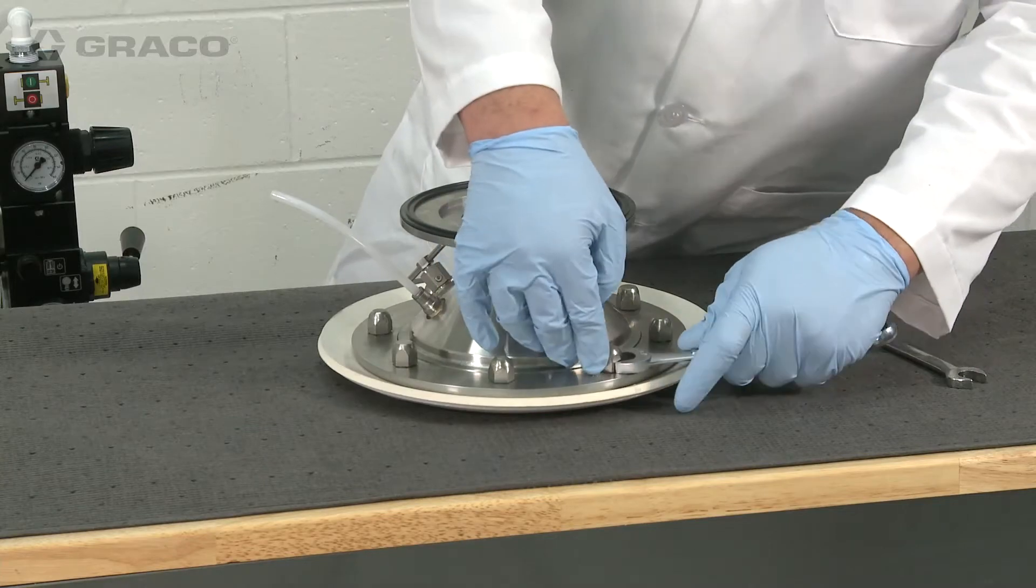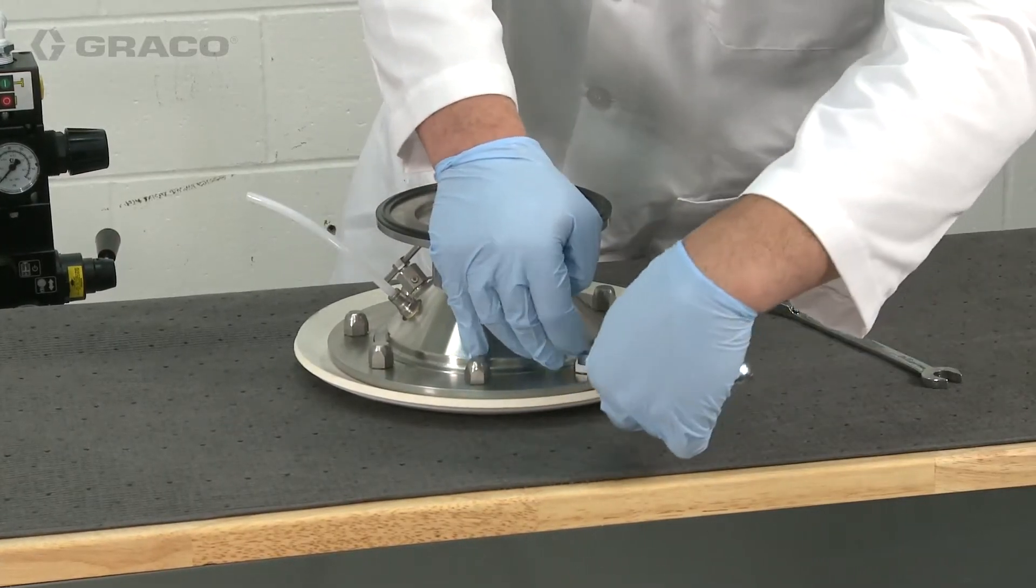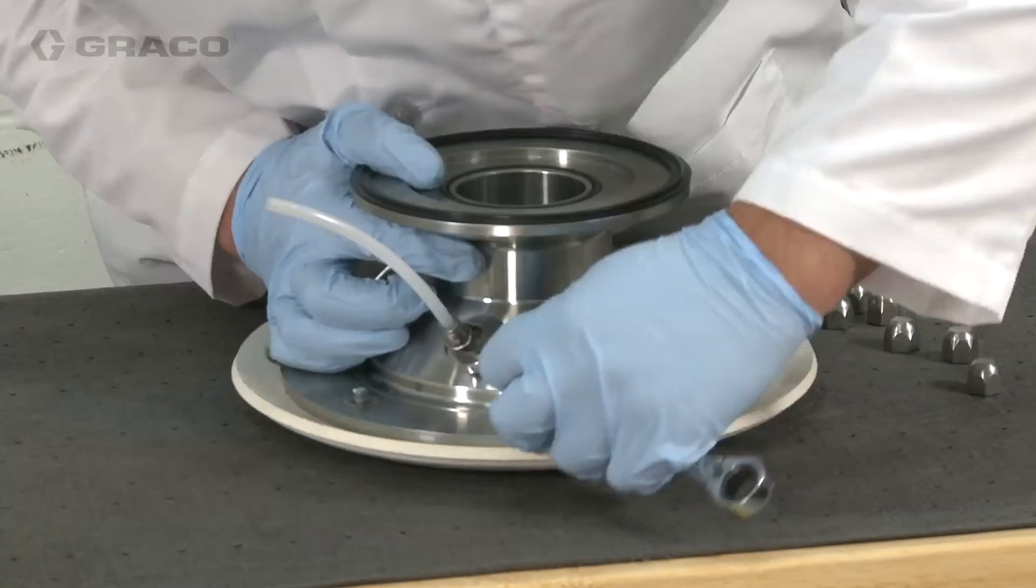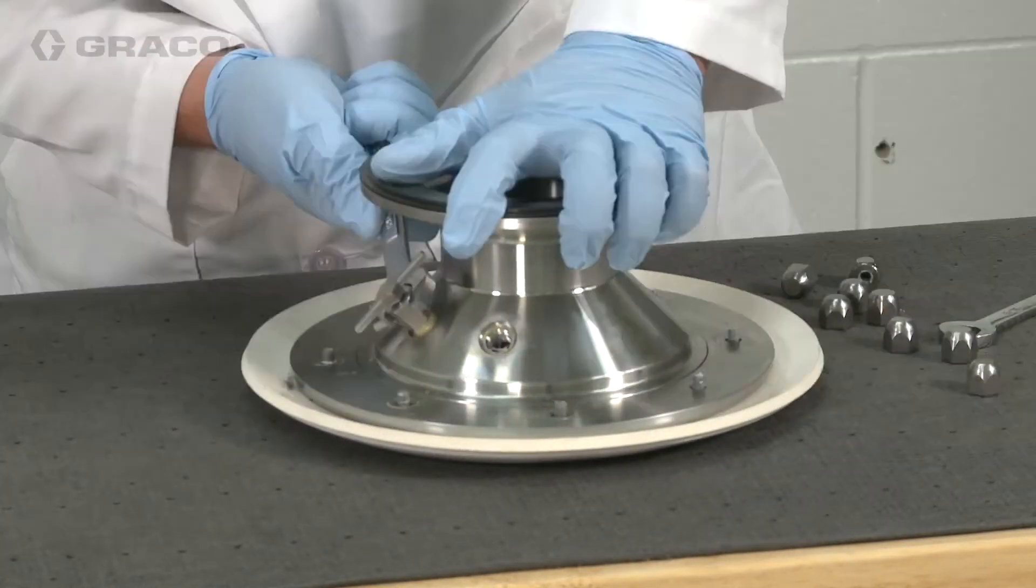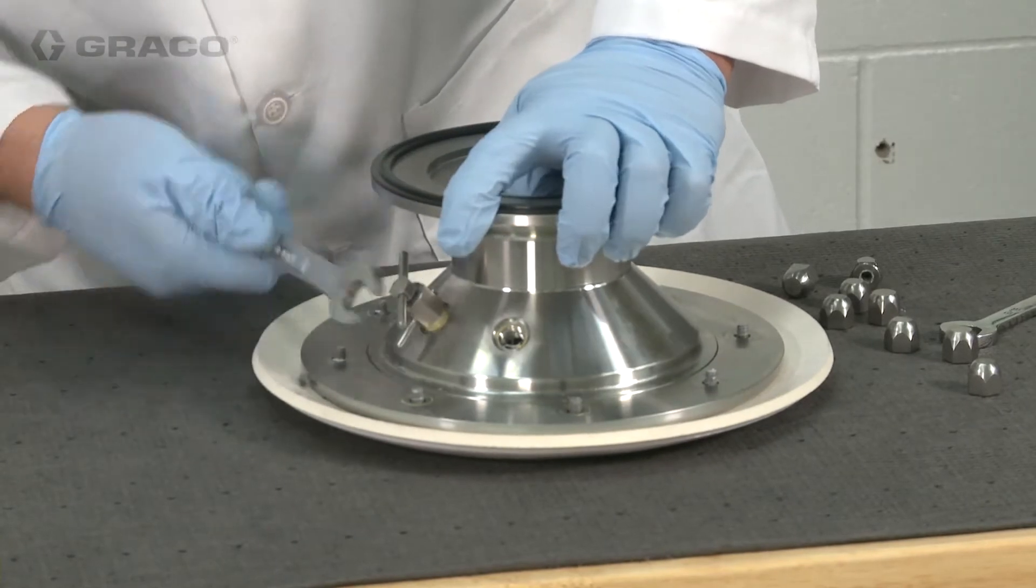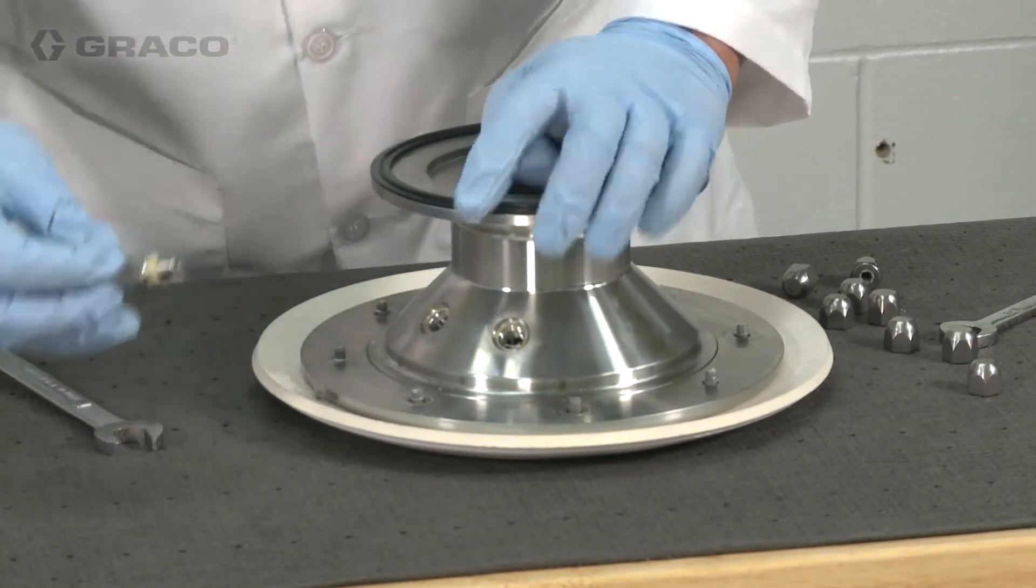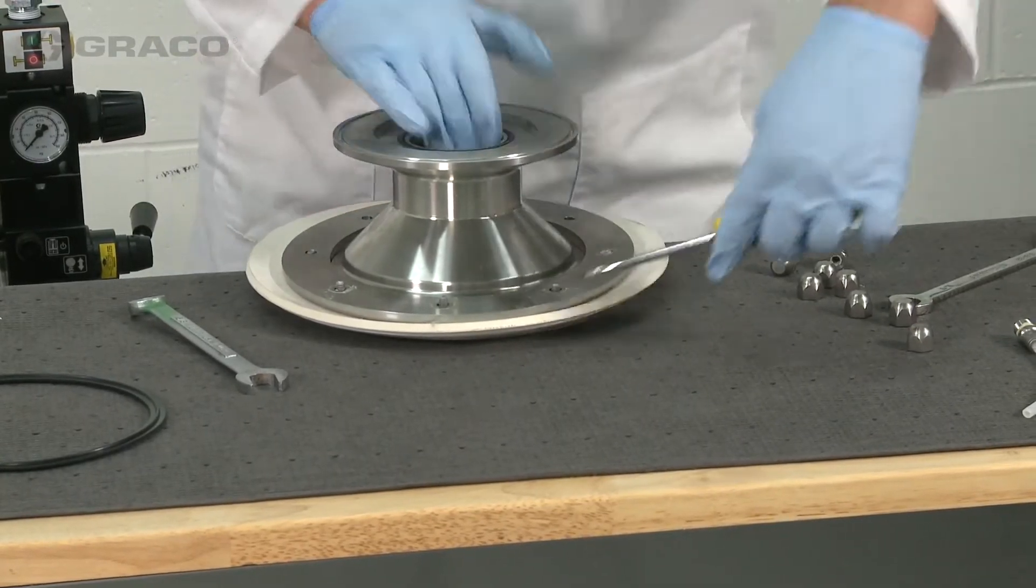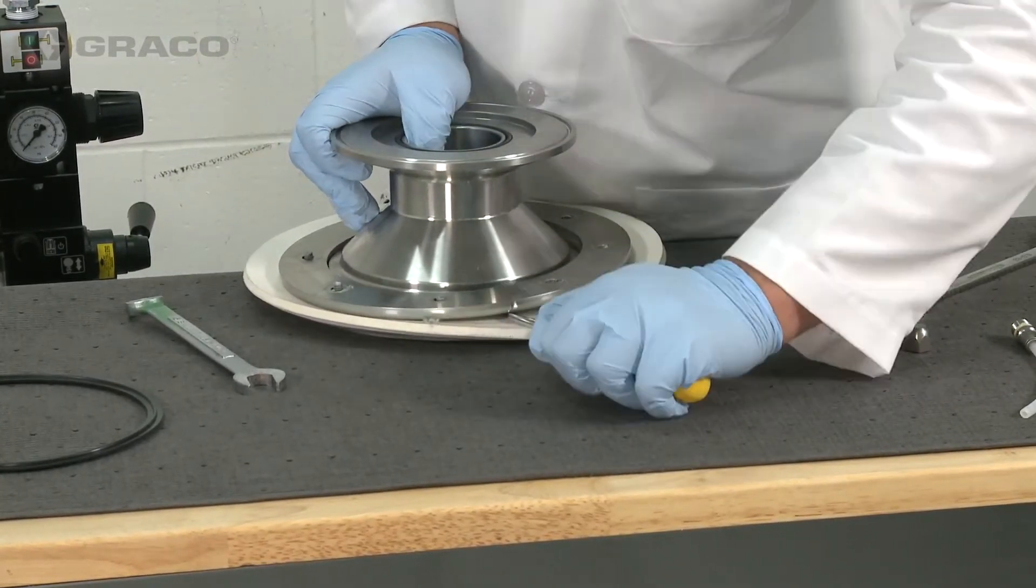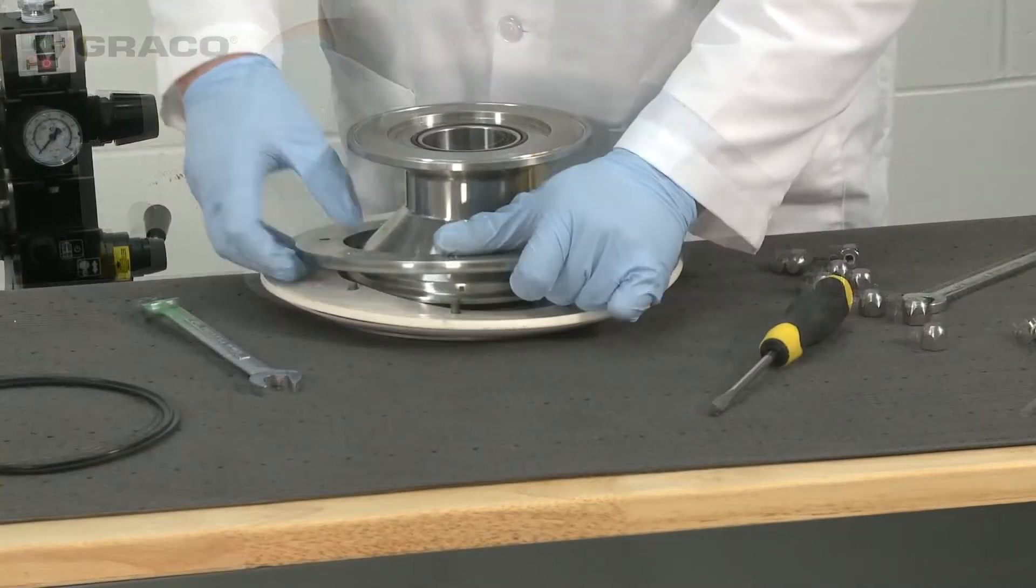Remove the cap nuts and disassemble the platten assembly. Remove blow-off port. Remove the bleed valve. Remove the retainer plate, wiper and backer support wipers from the platten.